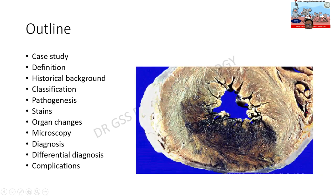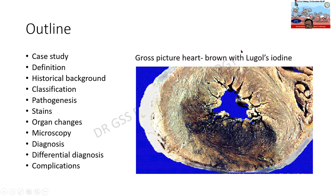This is an autopsy specimen retrieved from a patient with amyloidosis. There is a mahogany brown lesion in the myocardium. This was painted with Lugol's iodine to produce a brown color, which later on when painted with dilute sulfuric acid produced a blue color — the classical gross diagnosis of amyloid.